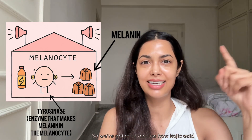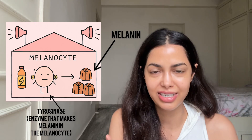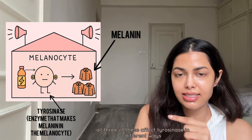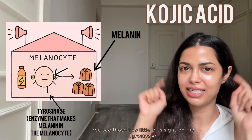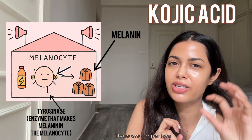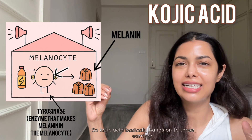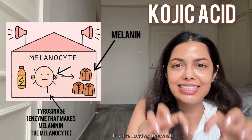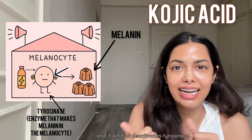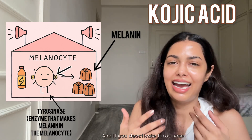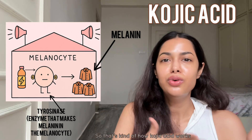We're going to discuss how kojic acid, alpha arbutin, and tranexamic acid all work and what is the difference in the way they work. All three of these affect tyrosinase in different ways. What does kojic acid do? You see those two little plus signs on the tyrosinase? Those are kind of his switches — those are copper ions. Think of it like his electrical power grid. Kojic acid basically hangs on to those and turns them off. It binds to the copper ions and deactivates tyrosinase, and if you deactivate tyrosinase, then melanin cannot be produced. That's how kojic acid works.